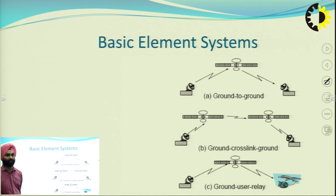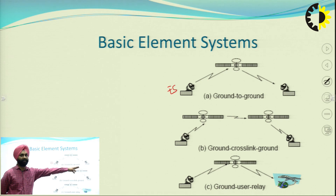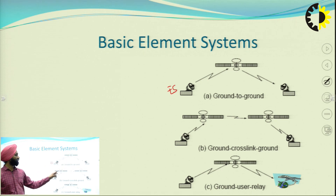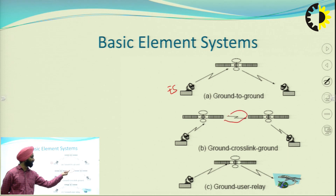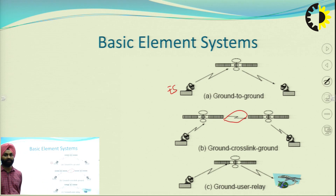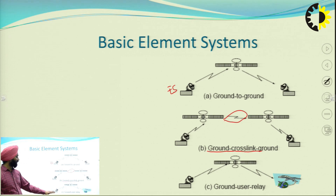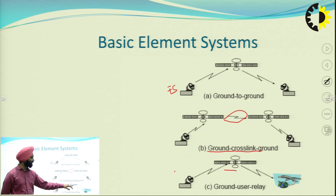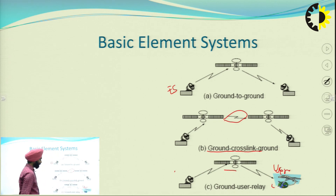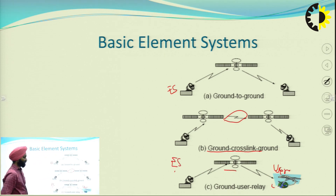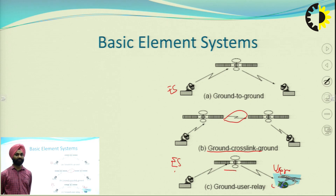There are different link types between stations. One is station-to-satellite, then satellite communicates with another satellite via crosslink, and that satellite communicates with another ground station. Another is the ground user relay, where a station communicates with the satellite, which then communicates with the user. These represent three types of communication links between satellites and stations.